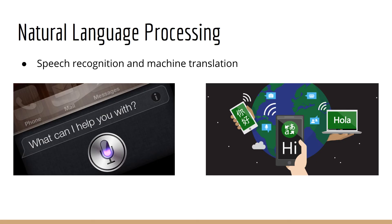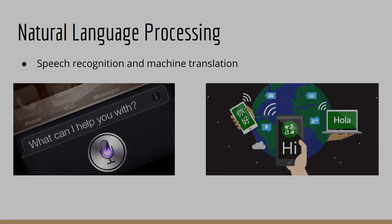We still have more: deep learning powers state-of-the-art natural language processing applications such as speech recognition and machine translation. Whenever you talk to your phone and it figures out you want to order a pizza or set an alarm for 6 a.m., that's speech recognition using deep learning in action. Neural machine translation has significantly enhanced language translation capabilities in recent years.